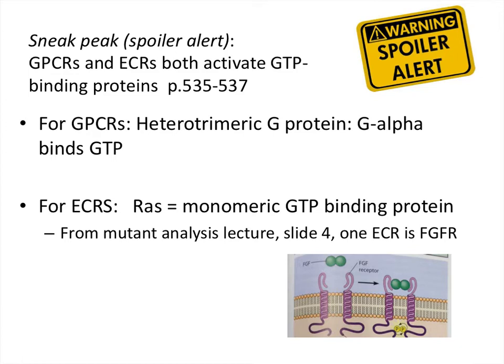There are two big things I want to point out. First off, you're going to see some compare and contrast between these different sorts of receptor proteins. One of which is that they both activate GTP-binding proteins. I would highly encourage you to check out pages 535 to 537 of your text, which give a broader context about receptor signaling and the three different types of cell surface receptors, two of which are these.